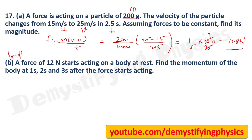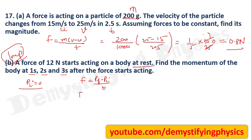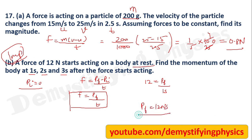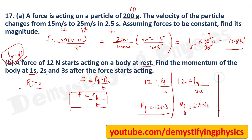A force of 12 Newton starts acting on a body at rest. Find the momentum at 1, 2, and 3 seconds. Since the body is at rest, initial momentum is zero. Using F = pf / t (since pi = 0): after 1 second, pf = 12 × 1 = 12 N·s; after 2 seconds, pf = 12 × 2 = 24 N·s; after 3 seconds, pf = 12 × 3 = 36 N·s.